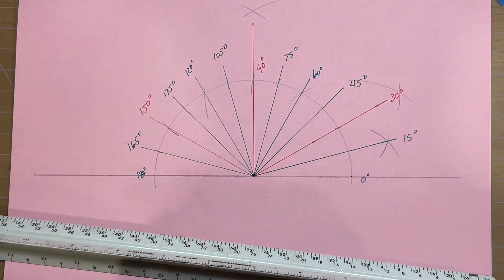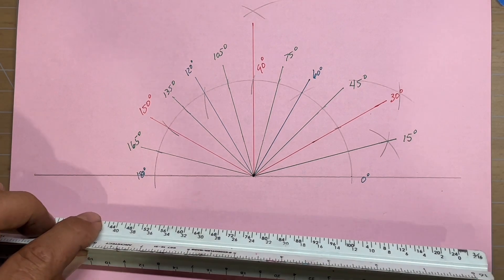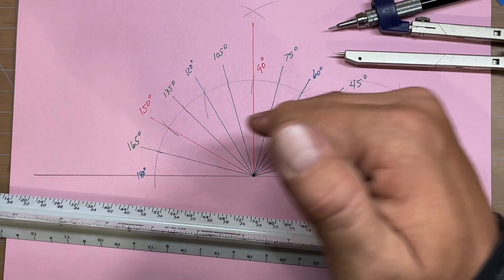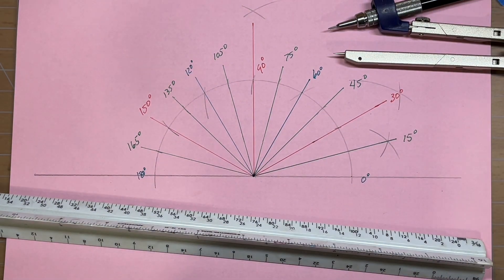And that is how, with a compass and a straight edge, you can lay out angles from 0 to 180 in 15 degree increments.